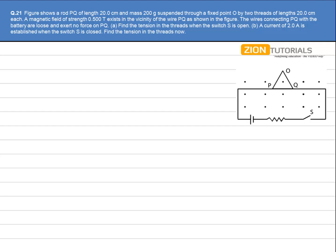Figure shows a load PQ of length 20 cm and mass 200 g suspended through a fixed point O by two threads of length 20 cm each. A magnetic field of strength 0.5 tesla exists in the vicinity of the wire PQ as shown in the figure.